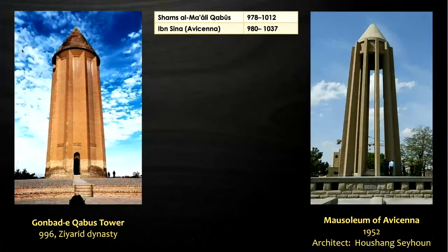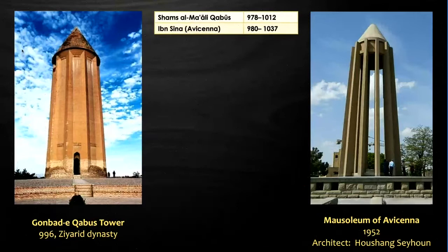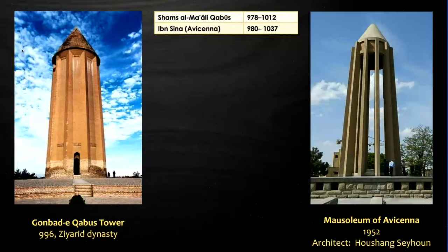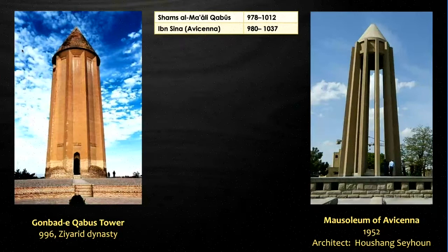As you can see in this slide, Sehun designed Avicenna's mausoleum with inspiration from the Gonbad-e Qabus Tower, as Avicenna and Qabus both lived at the same time. The Gonbad-e Qabus, shown on the left side, is a monumental tomb in the north of Iran and one of the UNESCO World Heritage Sites. Qabus, one of the Ziyarid rulers, built a magnificent tomb for himself during his lifetime in 996. Many European scholars have admired this monument as it bears similarities to modern buildings and minimalistic features.